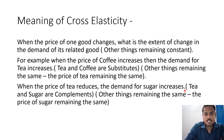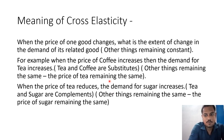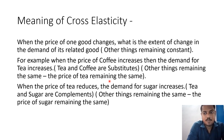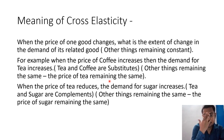Here tea and coffee are substitutes. Other things remaining the same — that is, the price of tea will not change, it will remain the same. Only coffee price is changing. Let us take another example: when the price of tea reduces, the demand for sugar increases. Tea and sugar are complementary goods — we need both. If you want to consume tea, you need sugar, so they are called complementary goods. Here also, other things remaining the same — that is, the price of sugar remaining the same.